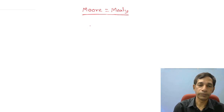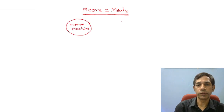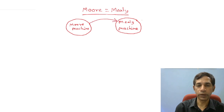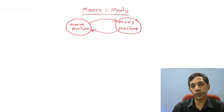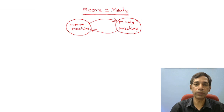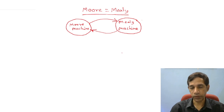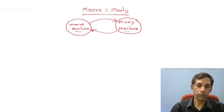If we have a Moore machine, we can obtain the equivalent Mealy machine from it. Similarly, if we have a Mealy machine, we can obtain the equivalent Moore machine from it. Conversion is possible in both directions — both machines are equivalent and can be converted to each other.